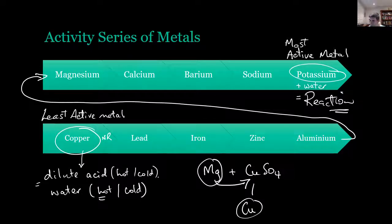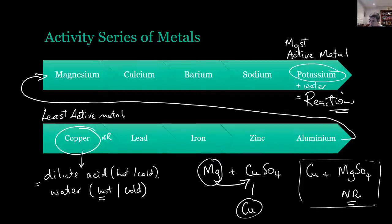However, if we were to add some copper to a magnesium sulfate solution, we would find no reaction. The copper is insufficient to actually push the magnesium out of solution. And as a consequence, this second reaction here would not occur. However, this first one would.